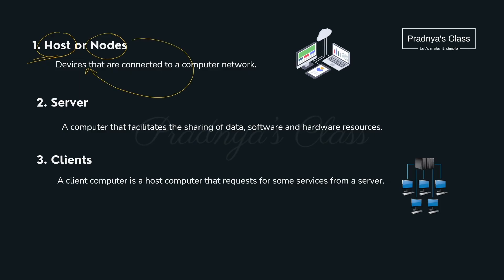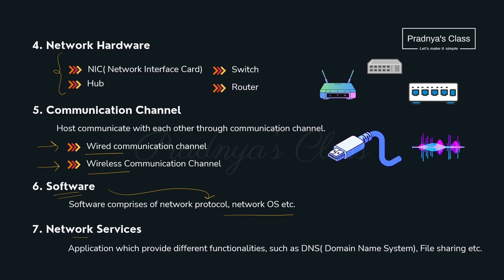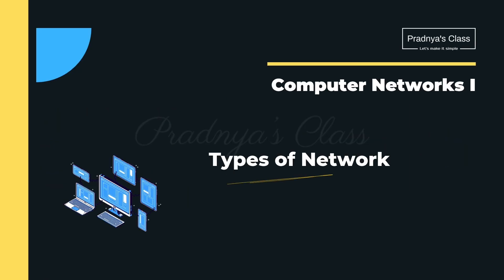The first term in networking is nodes or host — the devices which are connected over the network. A server is the main device used for sharing data, software and hardware. Clients are the other computers connected to the server — they are also nodes or hosts over the network. Communication channels are wired and wireless. Networking software includes network protocols and network operating systems. Services provided by the network include DNS (domain name system), file sharing, and other functionalities.